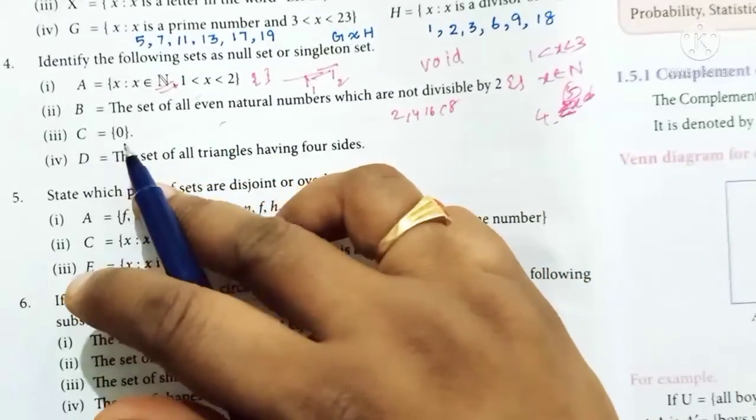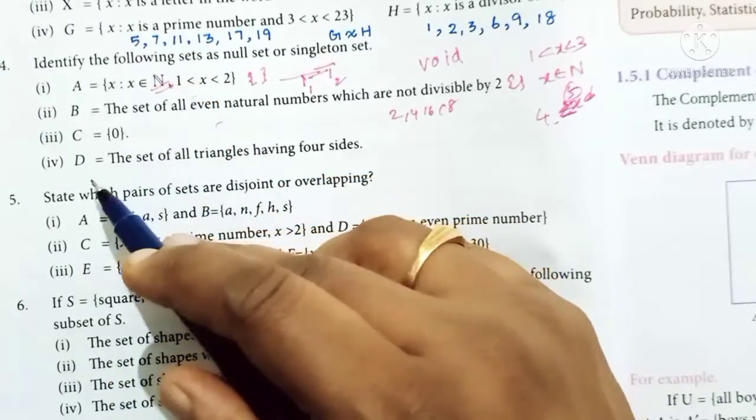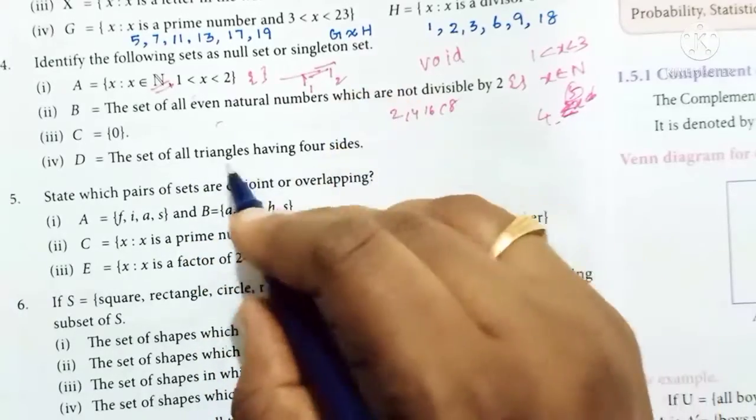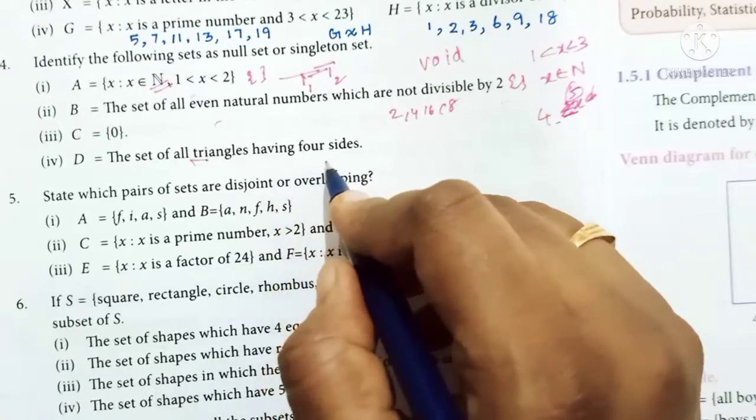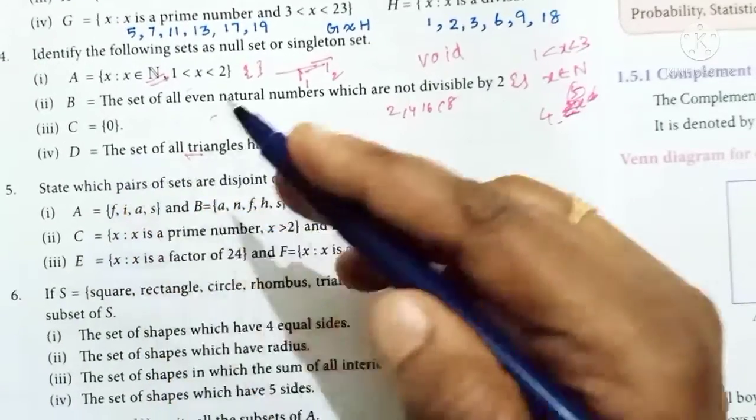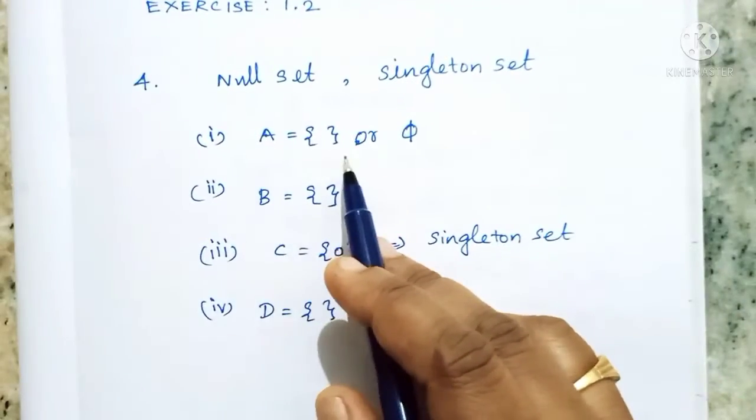Next, C = {0}. There is one element, so C is a singleton set. D is the set of all triangles having 4 sides. Triangles have 3 sides, not 4 sides, so D is an empty set.